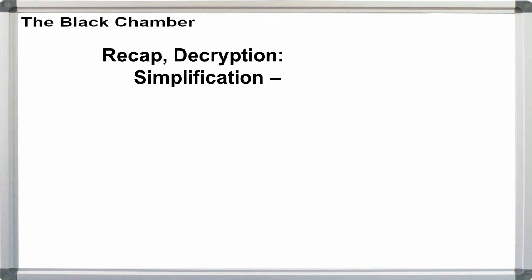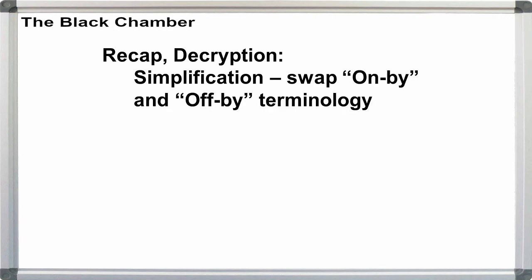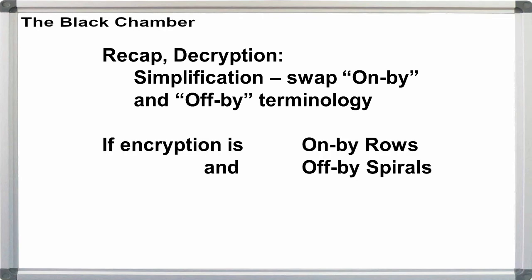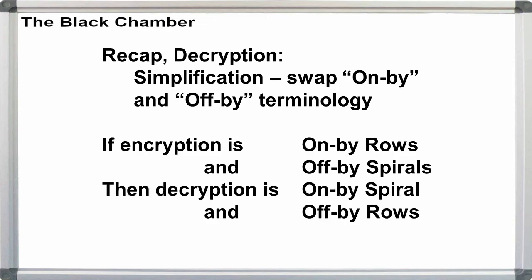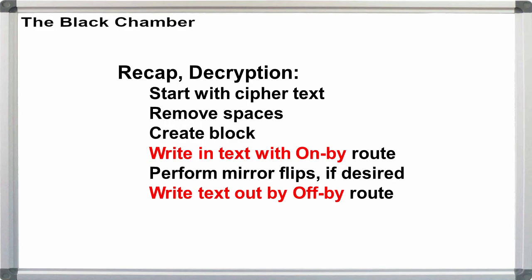Note that we can kind of simplify the terminology of the decryption stage as follows. Simply swap the names on-by and off-by. That is, if encryption used on-by-rows and off-by-spirals, then decryption will be on-by-spirals and off-by-rows. That way, the names used for the steps for encryption and decryption are identical. It's just the routes that are swapped.